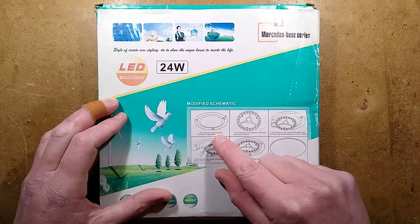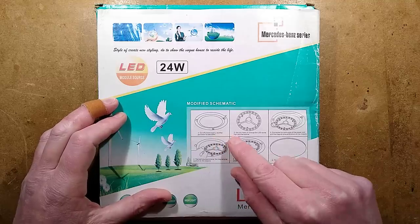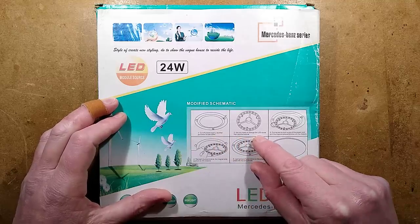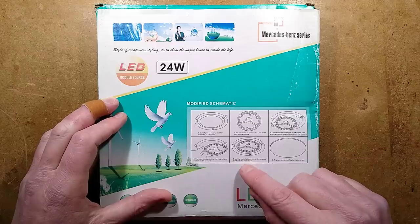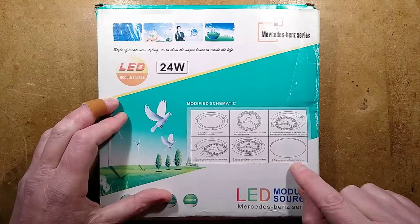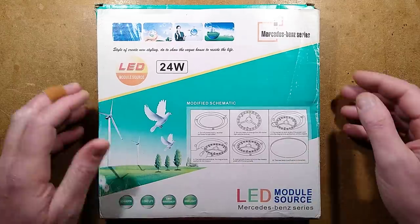The instructions are very clear. Cut off power supply, rectifier, pull down to bad tubes. Are you ready to change the LED dome light source module? Light group of adsorption on the chassis plate with the lampshade, the new lamp modification is complete. That sounds very straightforward.